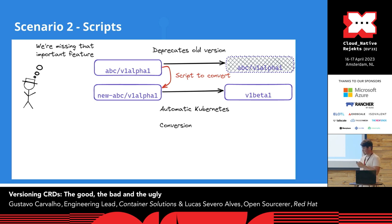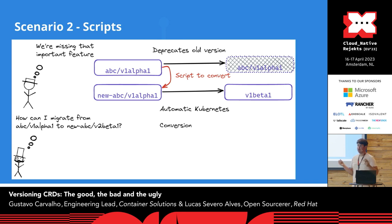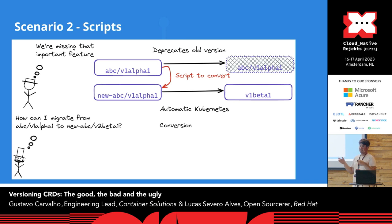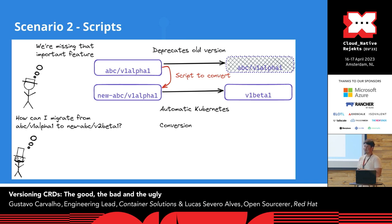How do scripts work? You have a given group for the first version you want to deprecate. You create a new group and provide a script for users to convert. After that script exists, you can safely deprecate the old one. The problem is that a user who catches the train five years later — when you're already on V3 or V4 — wants to upgrade. That's only possible if you actually maintain that script for every new version.